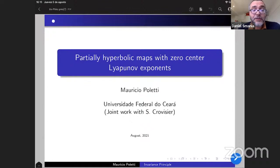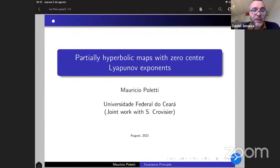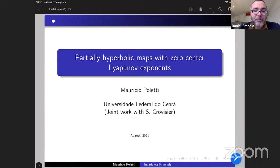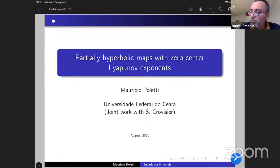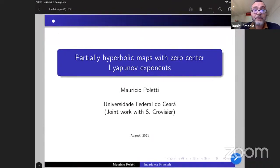Let's start the last section. There are two last talks. The first talk is by Mauricio Poletti from UFC, the Federal University of Ceará. He did a PhD at IMPA with Marcelo Viana, finished in 2016, and did a postdoc at Université Paris-Nord. He already has seven publications in very nice journals. Mauricio is going to talk about partially hyperbolic maps with zero-central Lyapunov exponents.